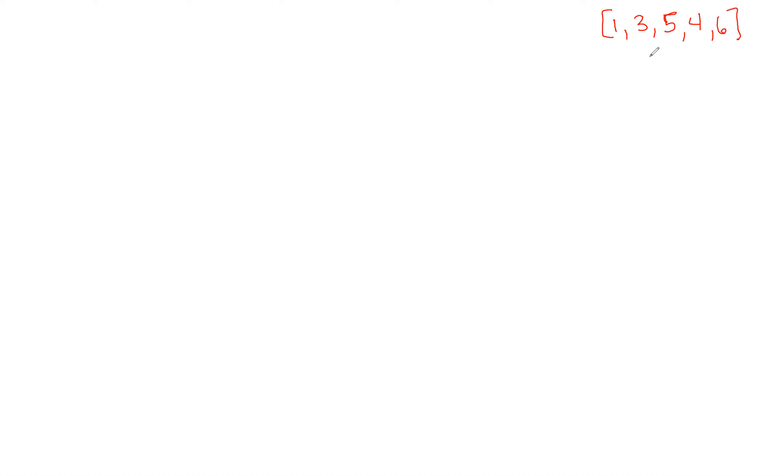We are going to solve the missing number problem, where we are given an array of one to n unique numbers, and one of them is missing, and we need to return that missing number. Let's do a little example: one, three, five, four, and six. So in this example, we're missing two.